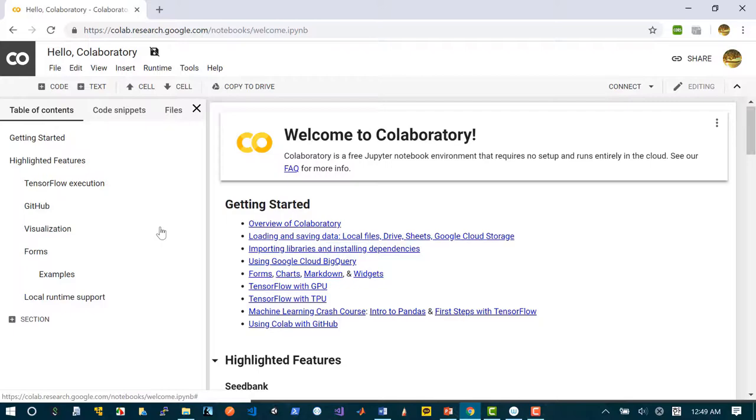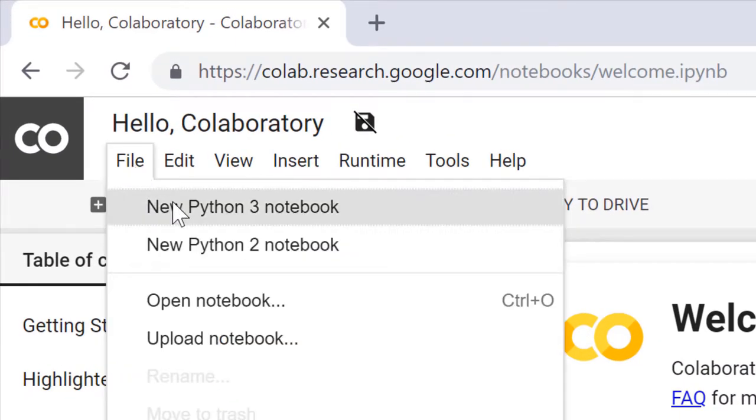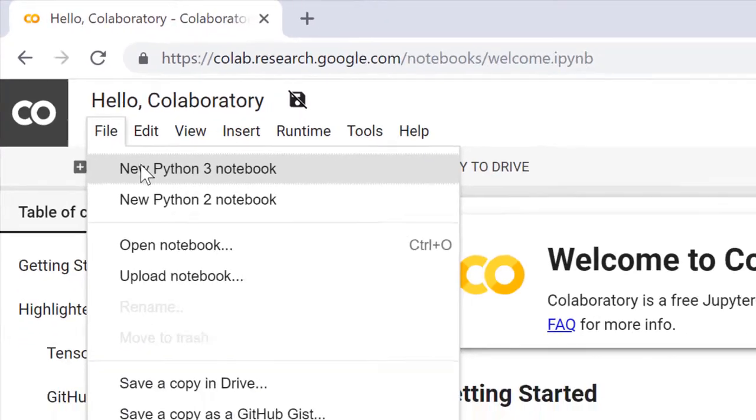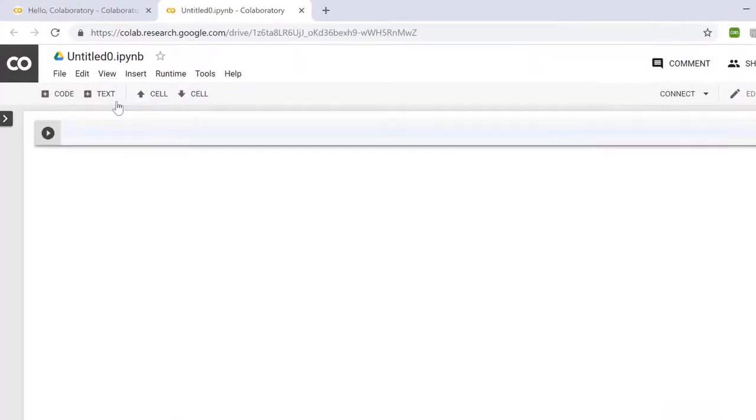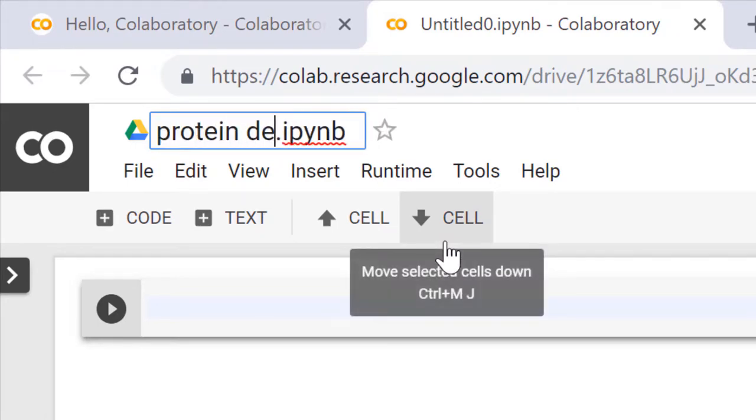Let's cancel this first. So first thing I'm gonna do is I'm gonna create a new notebook. So let's create new Python 3 notebook. Here I have that. So maybe I want to have a name as protein degradation.